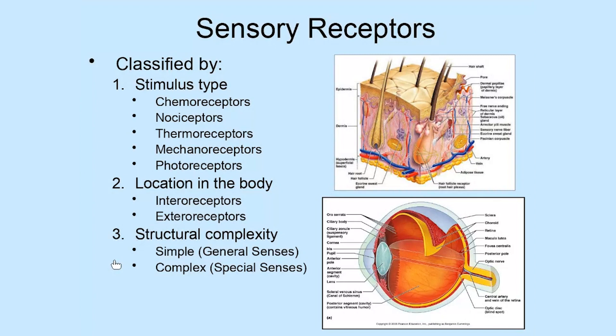Mechanoreceptors respond to changes in pressure, such as stretch on an organ. In the lungs, we have mechanoreceptors that detect stretch as the lungs inflate during inhalation. In the stomach, we have mechanoreceptors that detect stretch — for example, when you're eating and your stomach is becoming full, they signal that your stomach is stretching and that you're full. So mechanoreceptors are found throughout the body and their job is to detect changes in mechanical pressure, a good example being stretch.